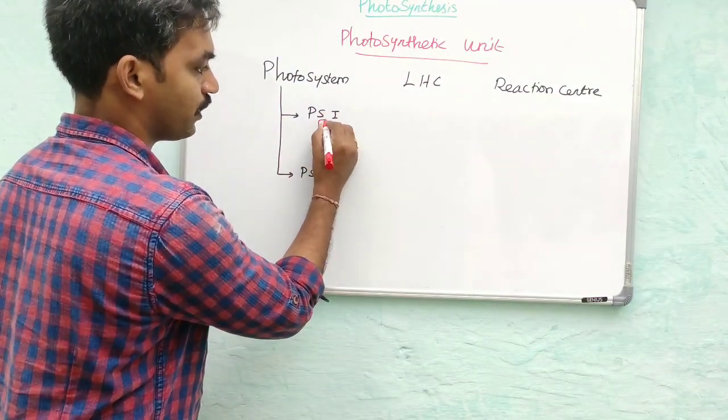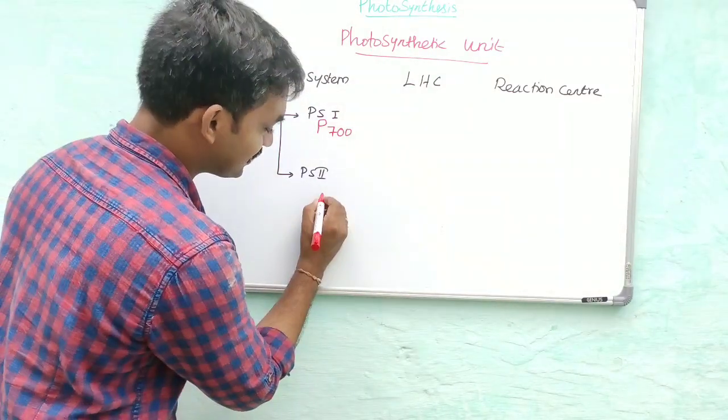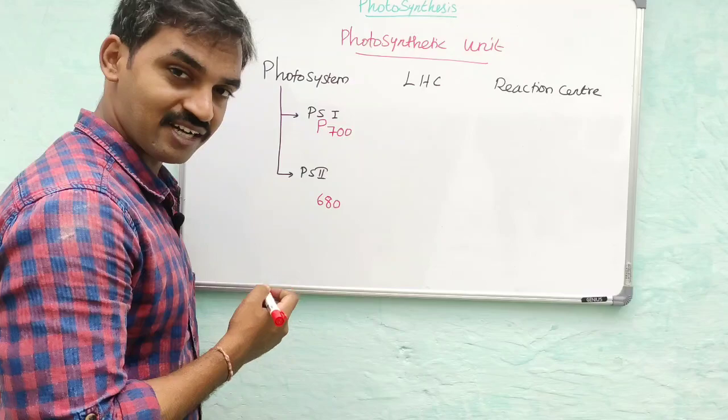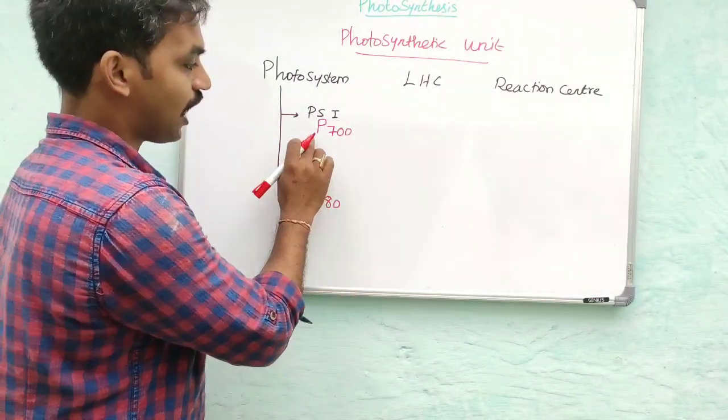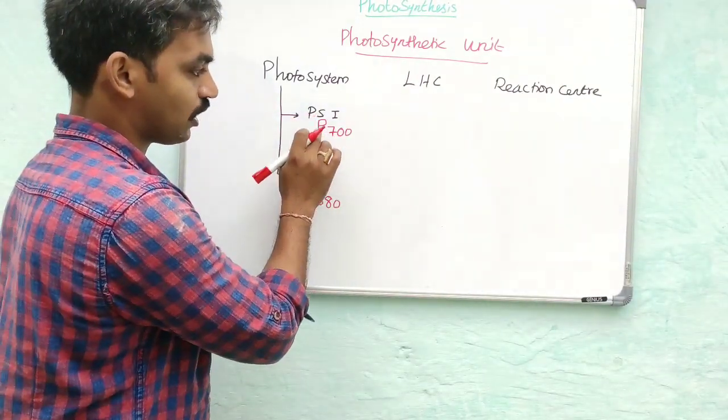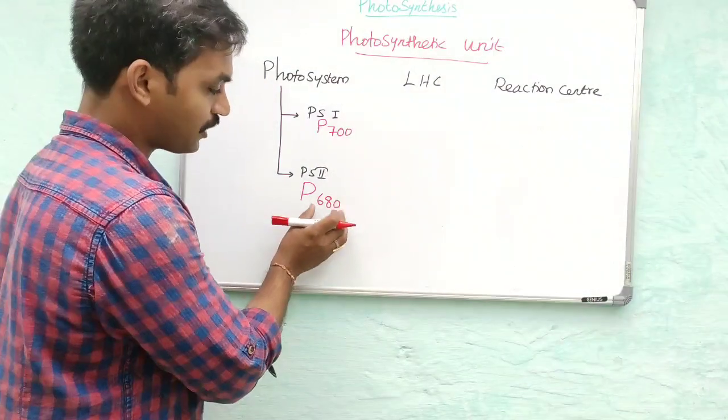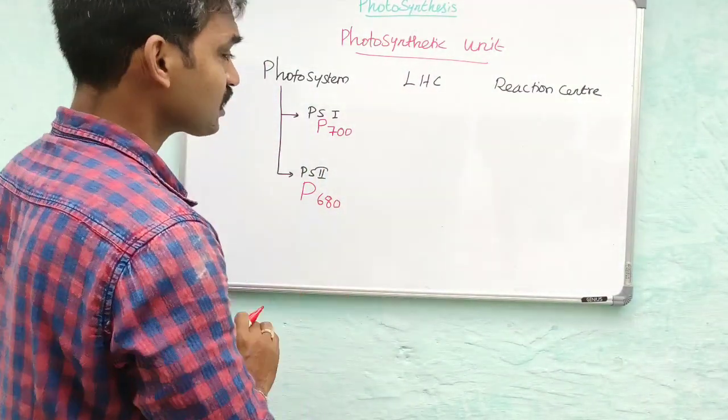Therefore, PS1 is also called P700. PS2 absorbs light actively at 680 nanometers, so it is called P680. These names refer to the particular wavelengths at which they actively absorb light.